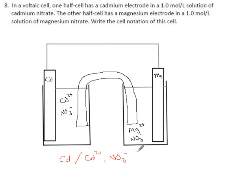The salt bridge is represented by a double slash, so that means one side is ended and now we're talking about the other side. On the other side we have the magnesium ions and the nitrates again, slash, and then our magnesium.